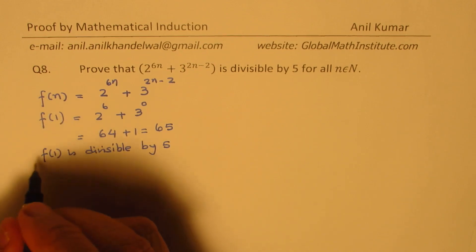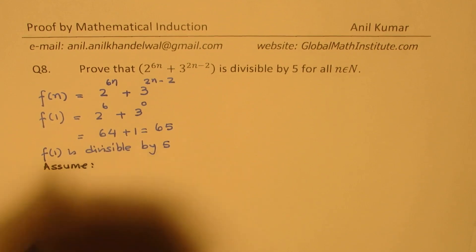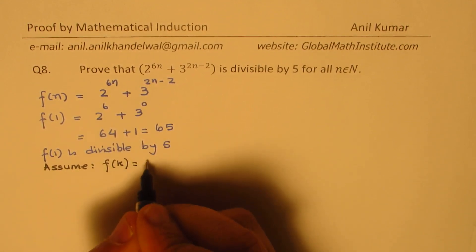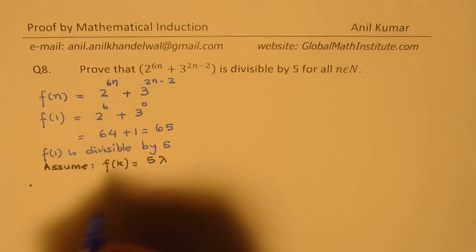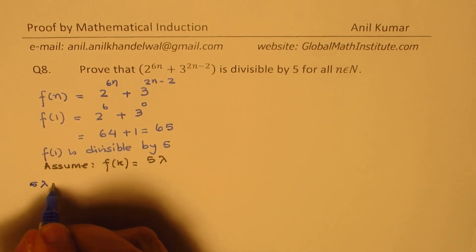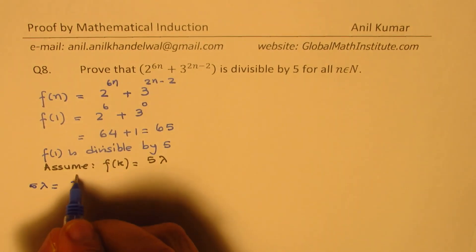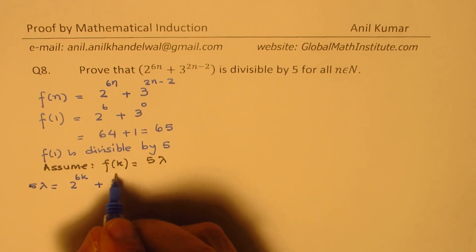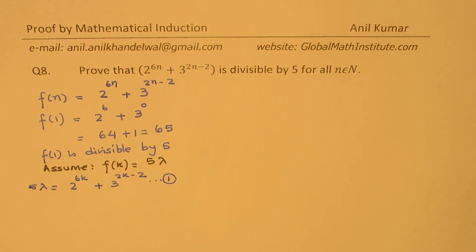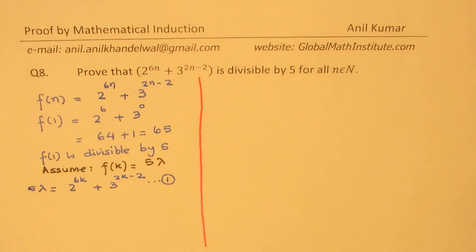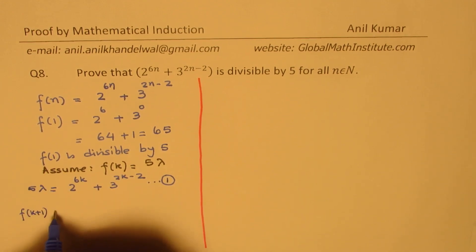Now we make our assumption that f(k) equals 5 lambda, meaning it is also divisible by 5. So 5 lambda equals 2 to the power of 6k plus 3 to the power of 2k minus 2. That is our equation number 1. The idea is now to find whether f(k+1) is a multiple of 5 or not.